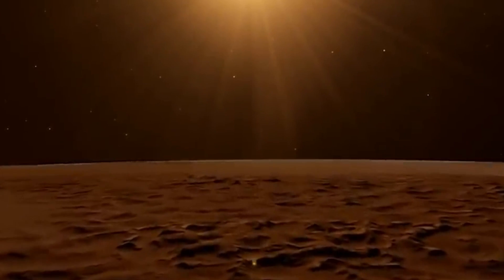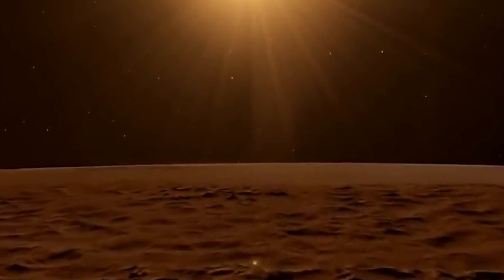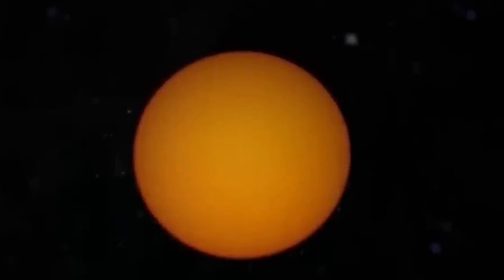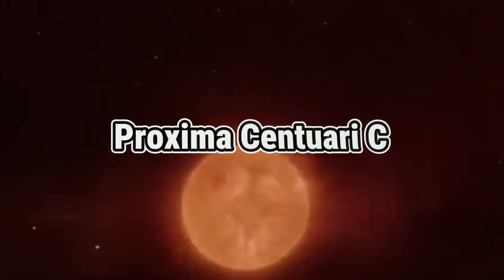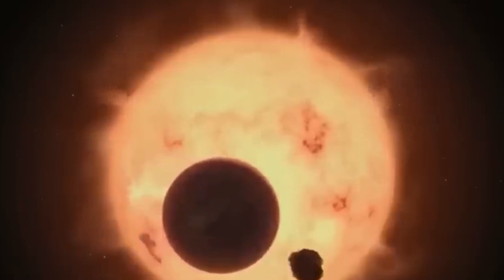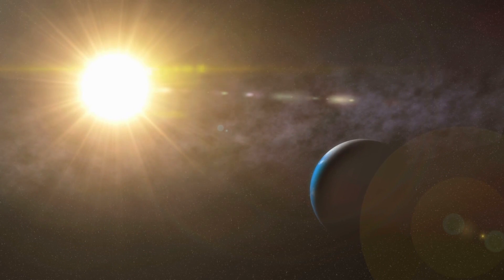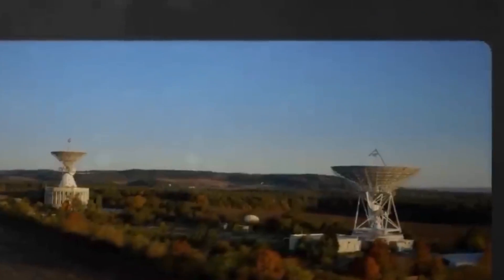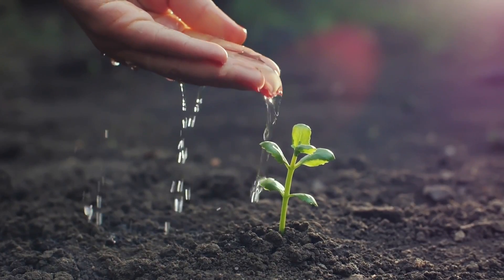Adding to the fascination, Proxima Centauri b isn't alone in its journey. It shares an orbit with another sizeable planet, Proxima Centauri c. Proxima Centauri b gets about the same energy from its star as Earth gets from the Sun. This makes scientists curious about whether this faraway planet could have water or support life.